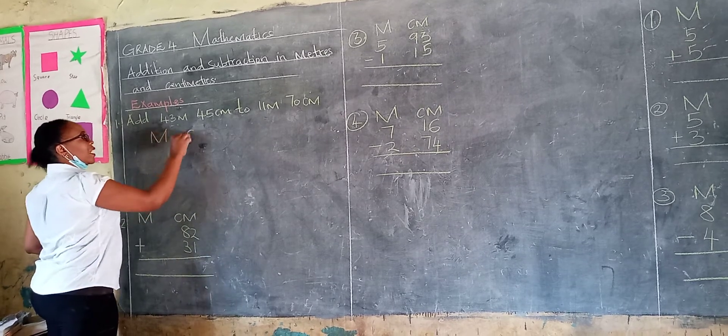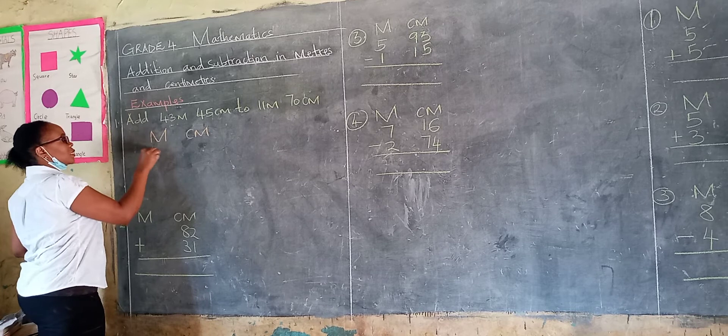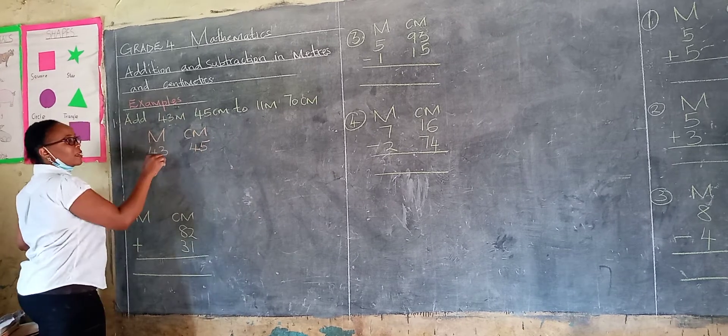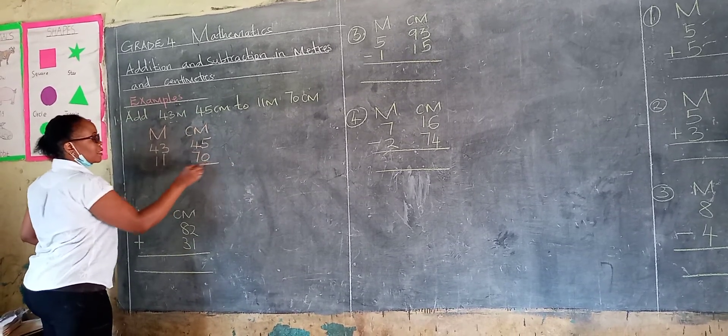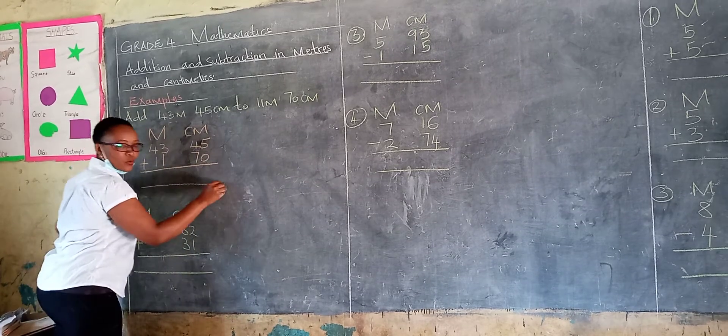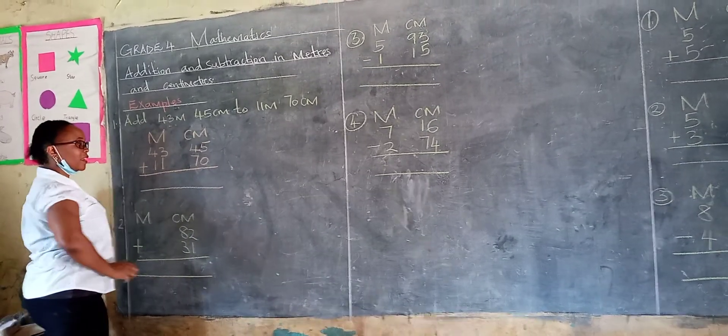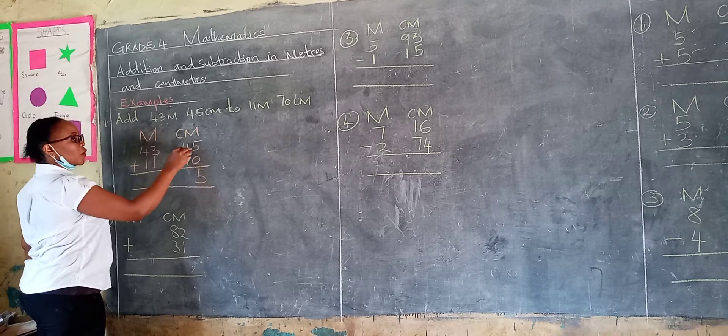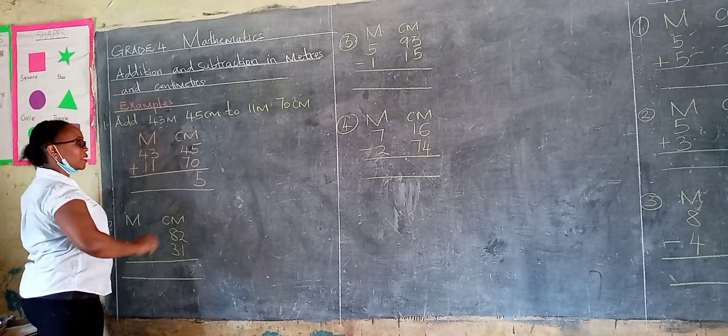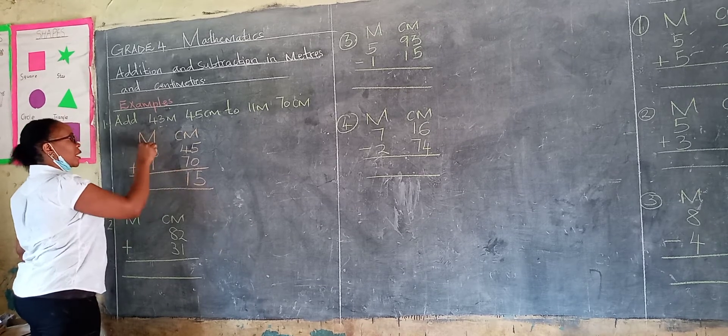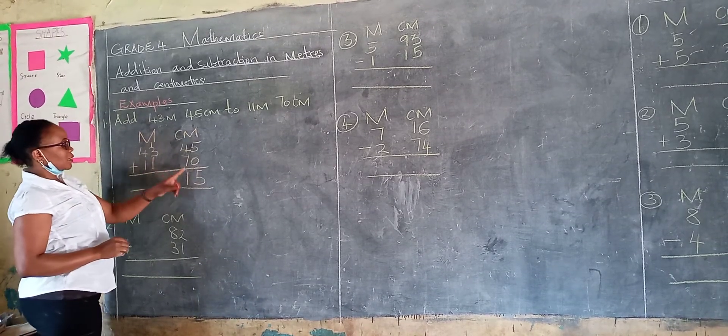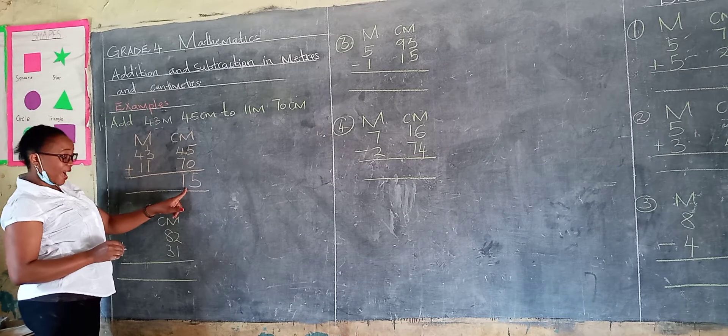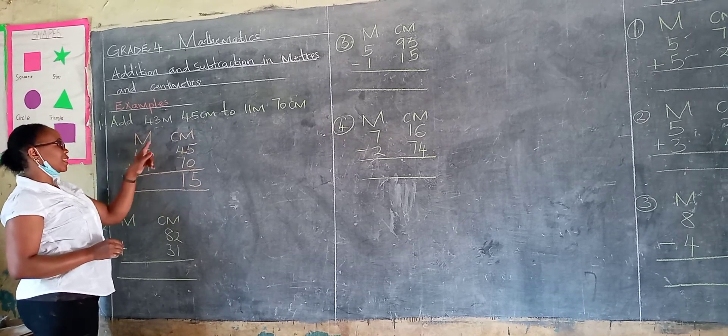We have the side of meters and we have centimeters. So we have 43 meters, we have 45 centimeters. You add to 11 meters, then 70 centimeters. Let's do it together, learner. I hope you are ready with your book, your pen, and work together with me. 5 add 0 is 5. 4 add 7, learner. I hope you are saying it's 11. You write 1, you carry 1. So why didn't we write 11 here? Because the answer will be 115. If you take away 100, it will remain 15.